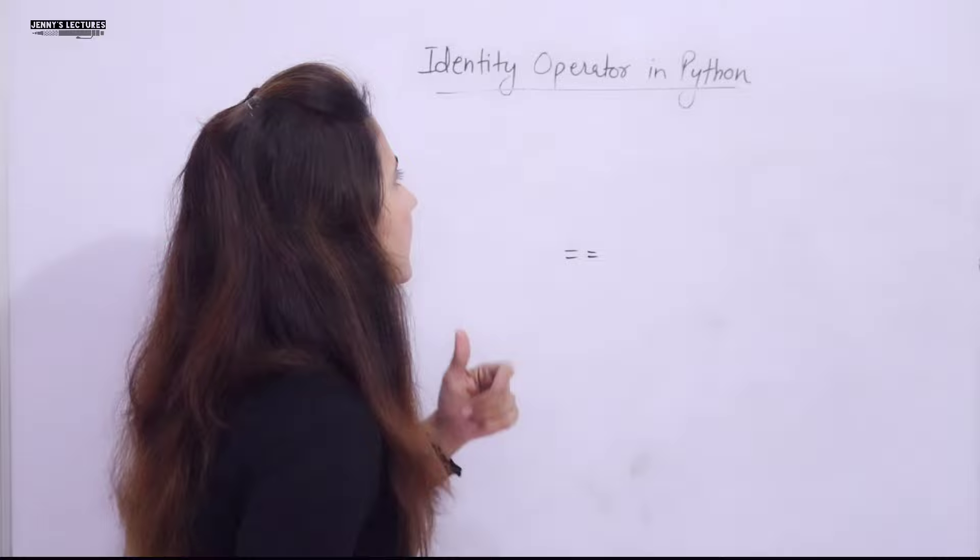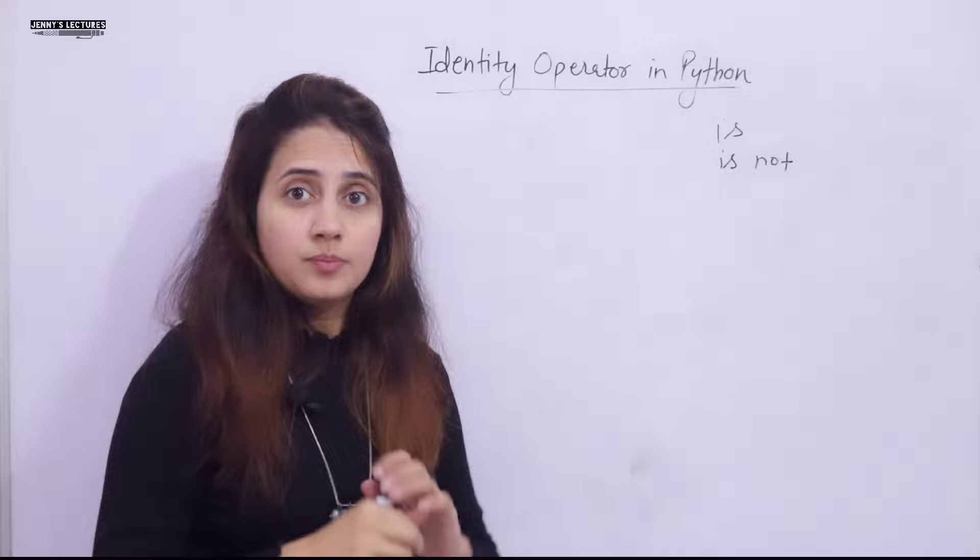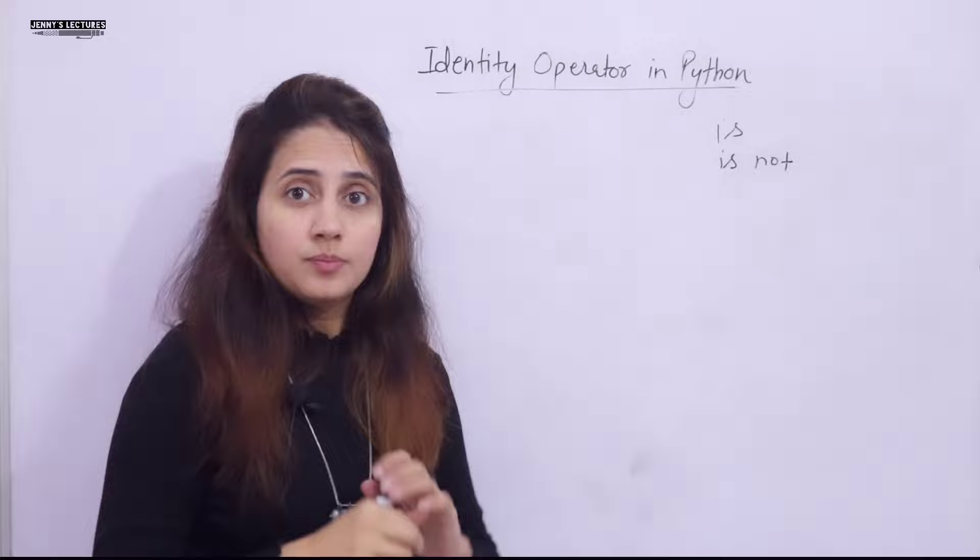So, identity operators in Python: basically there are two — `is` and `is not`. They are used to compare objects, checking if both objects are actually the same object and share the same memory location.